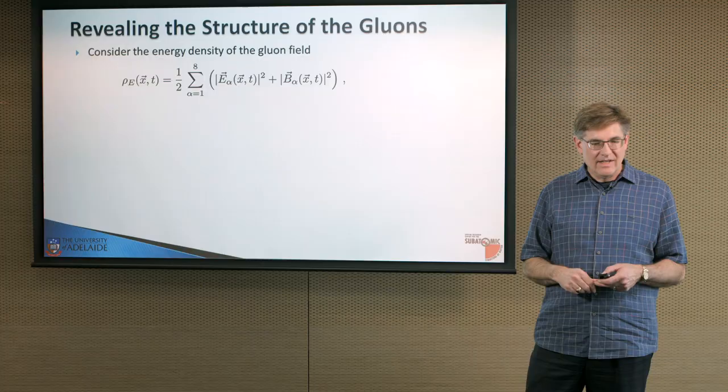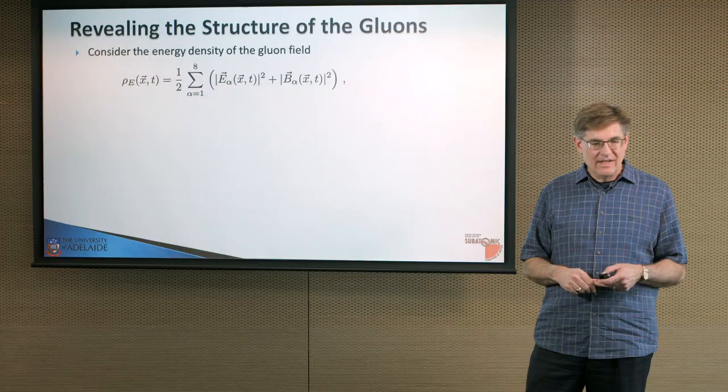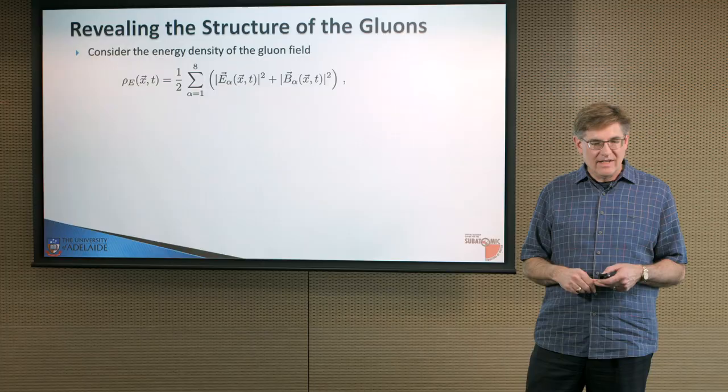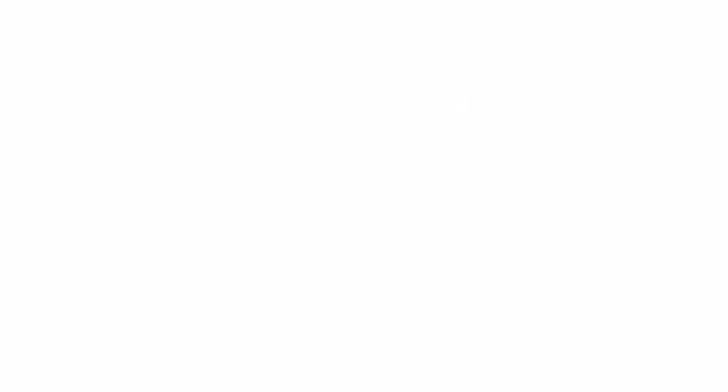I'm going to consider the energy density of the gluon field at each point in space and time. And that's just the square of the electric field strength and the magnetic field strength. And we add it up over those eight different gluon fields that are available. At each point in space-time, yes, there are eight electric fields, eight magnetic fields, we add up the energy associated with those fields.